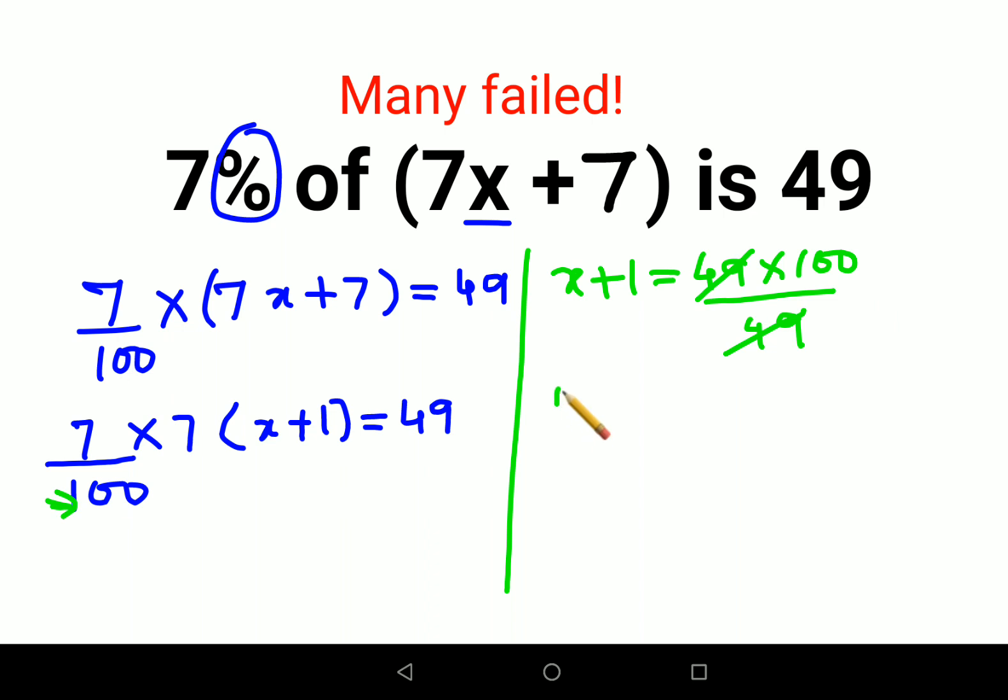So we have now x plus 1 equals to 100. Therefore I can say value of x is nothing but 100 minus 1, which is 99.